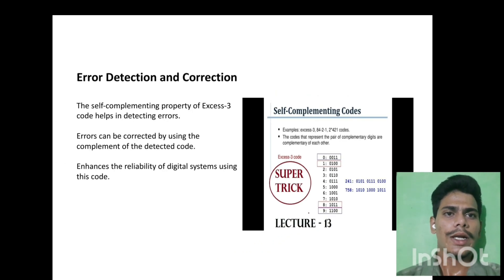We see the error detection and correction. The self-complementing property of XS3 code helps in detecting errors. Errors can be corrected by using the complement of the detected code. Enhances the reliability of digital systems using this code.